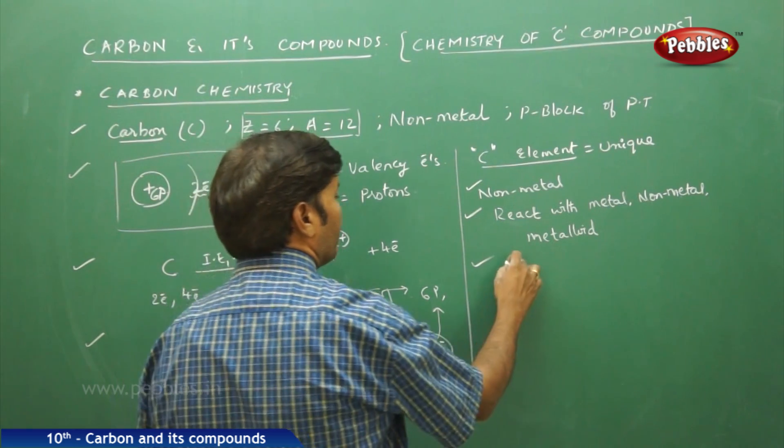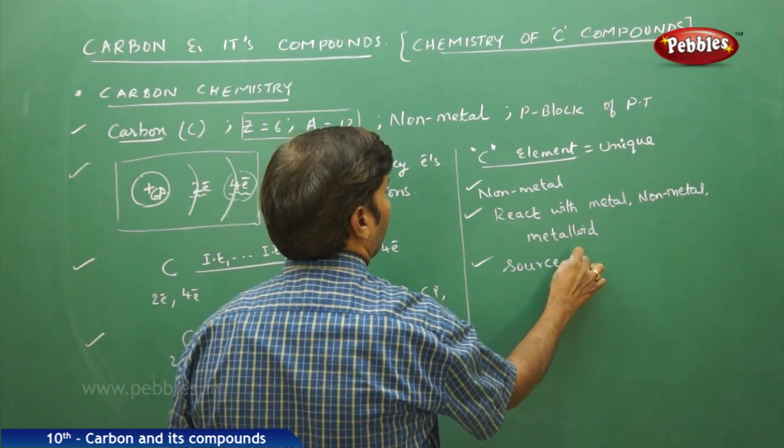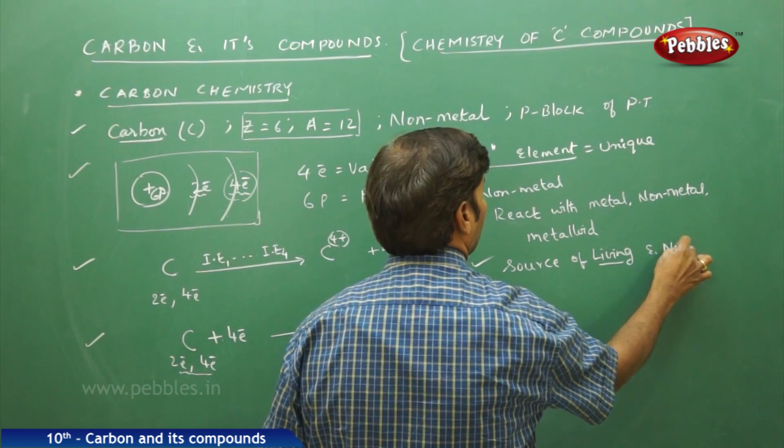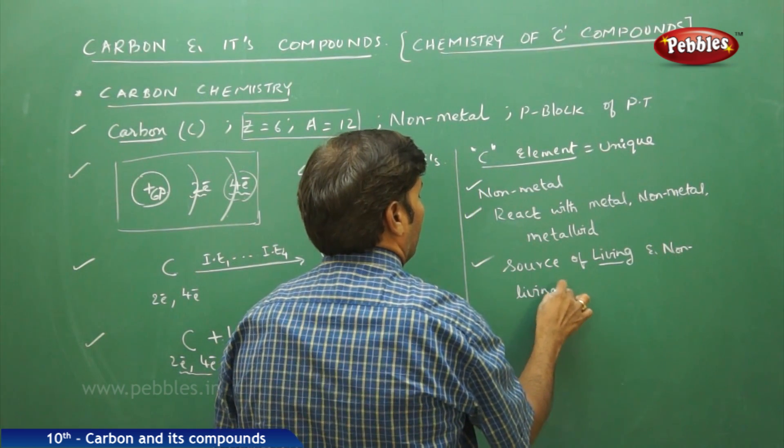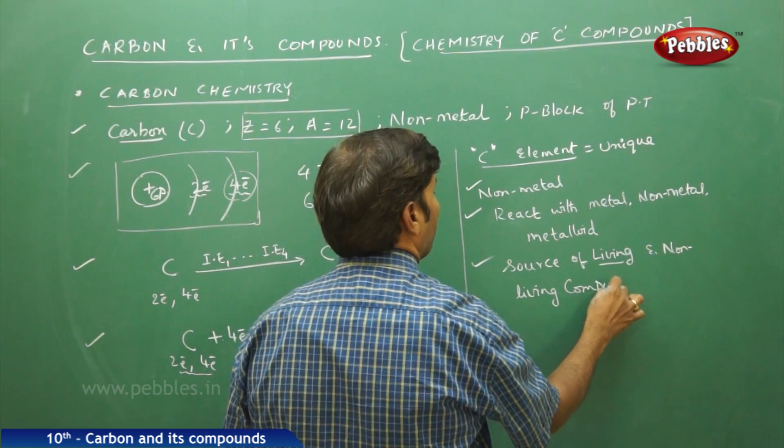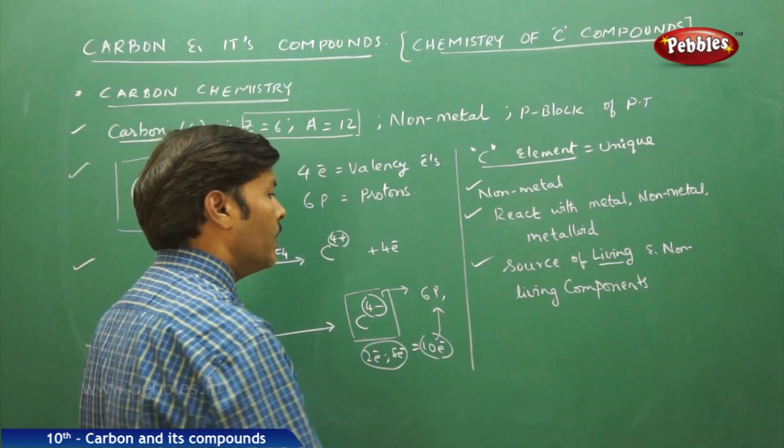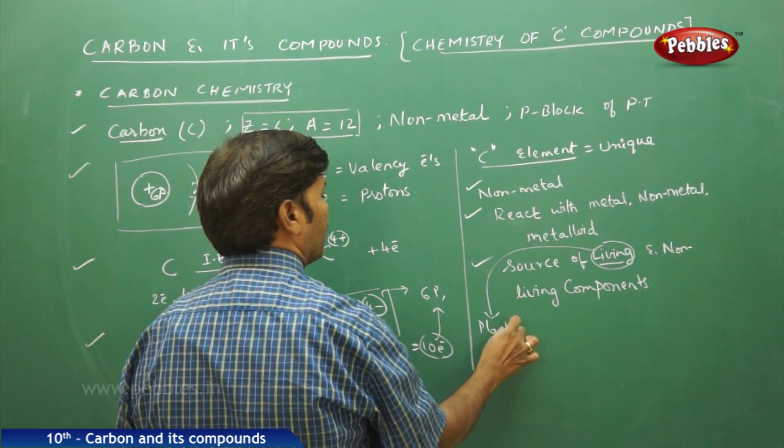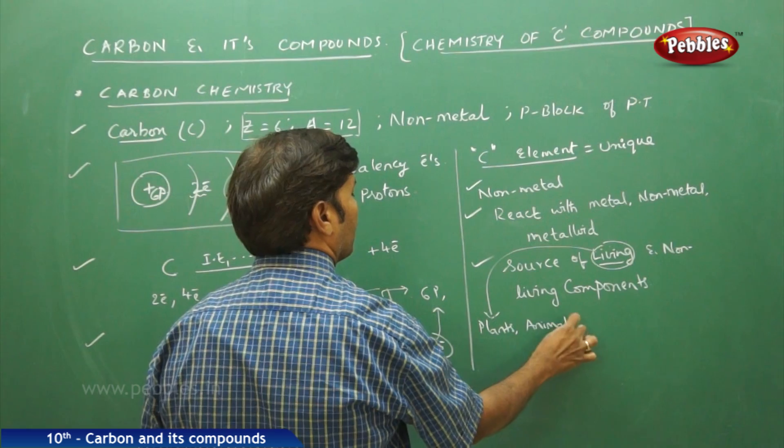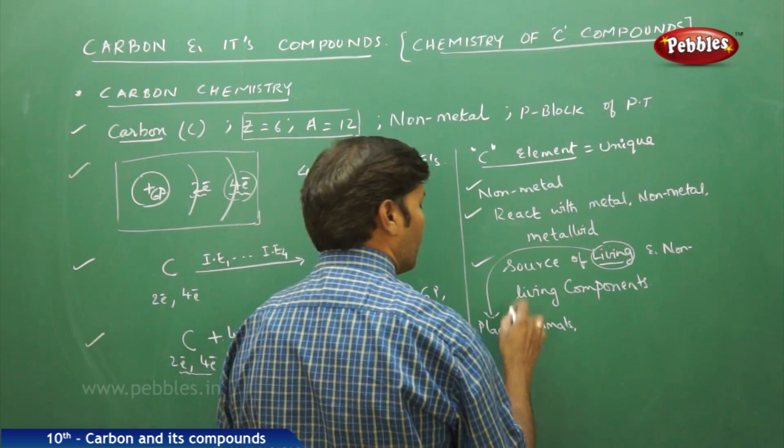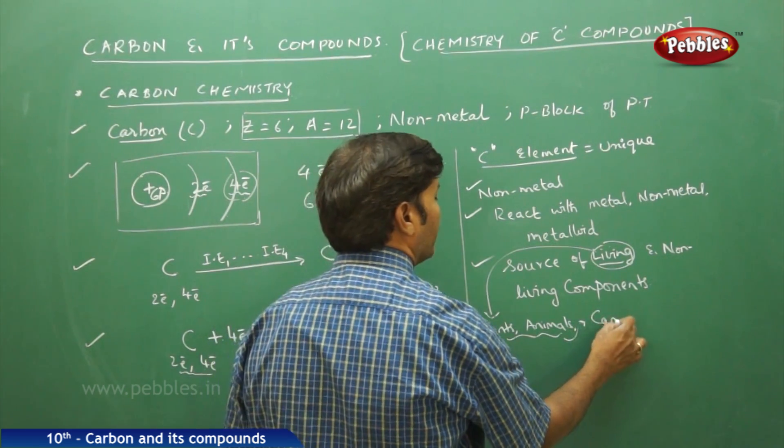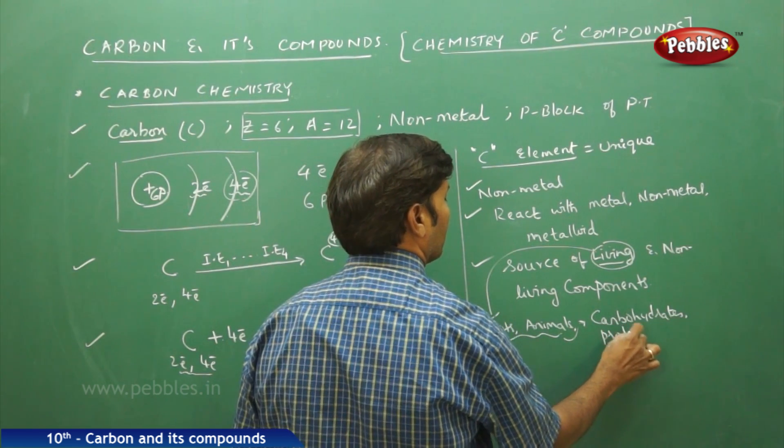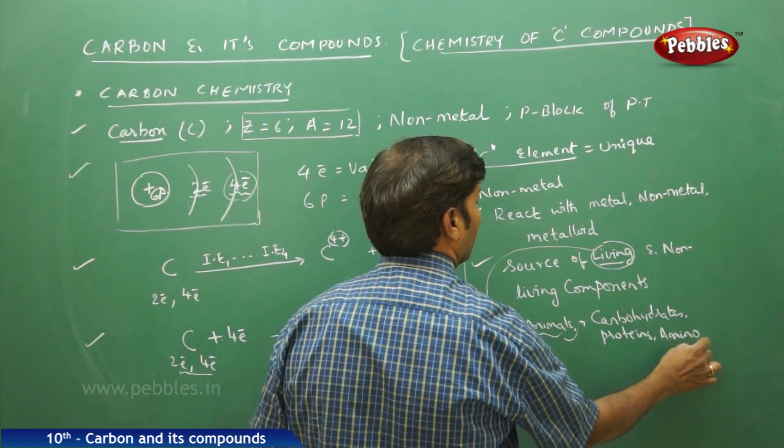This carbon is a source of living and non-living components. If you go for living, if you take the living source, for example, living source plants, animals. These plants and animals in turn, they produce certain energy sources like carbohydrates, proteins, amino acids and so on.